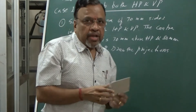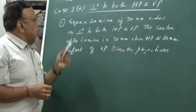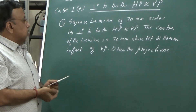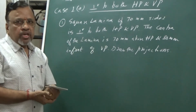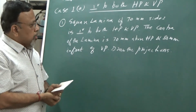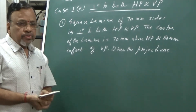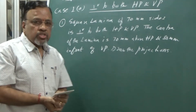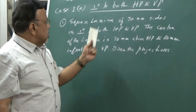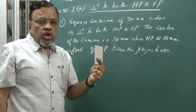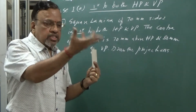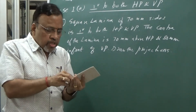Let us illustrate this with an example. We have a square lamina of 70 mm sides perpendicular to both HP as well as VP. The center of the lamina is 70 mm above HP and 80 mm in front of VP. Draw the projections. Since the lamina is perpendicular to both HP and VP, the true shape and size of this particular lamina will be seen in side view, and I need to start from side view.